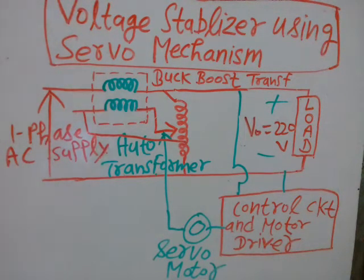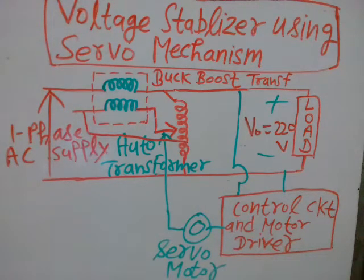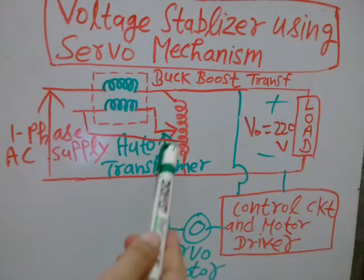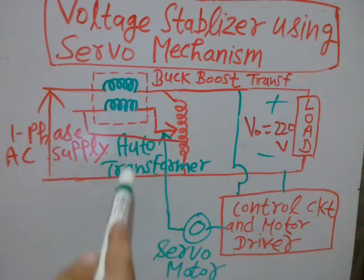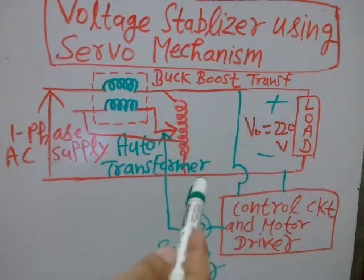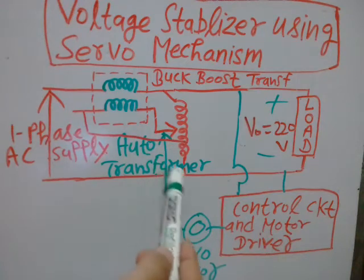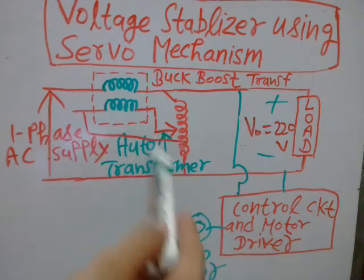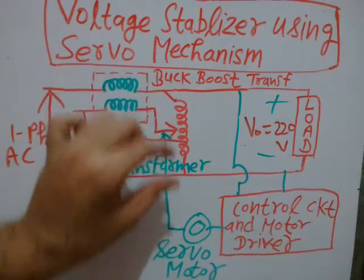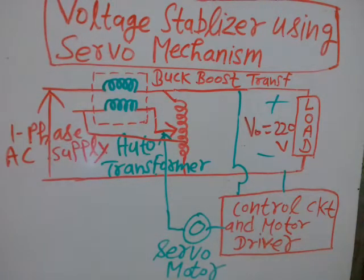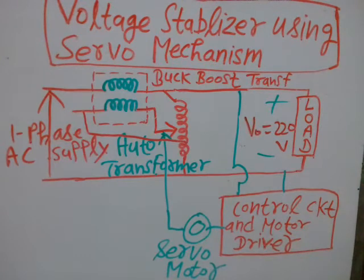The servo motor has two windings — a control winding and a reference winding — with 90-degree phase displacement. This servo motor is connected to a stylus that moves over the toroidal winding of the auto transformer. As the stylus moves, the number of turns changes and hence the voltage changes. The auto transformer is also known as a variable AC voltage source and is used to vary the voltage across the load terminal.